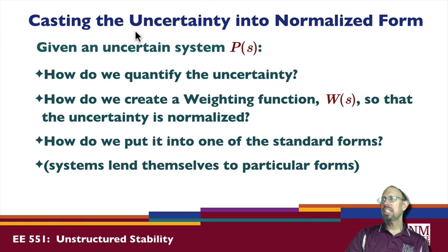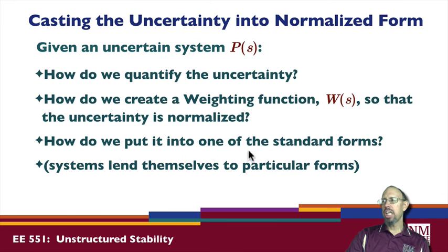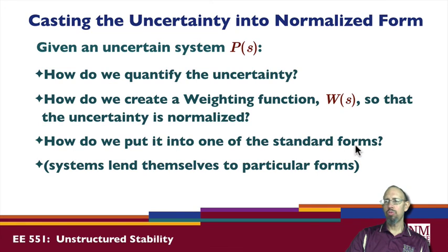In terms of casting the uncertainty into a normalized form: given an uncertainty, how do we quantify it, how do we create a weighting function W so that the uncertainty is normalized, and how do we put a problem into one of these standard forms? In general, systems will tend to lend themselves to particular forms, but to see how to actually do it we need to look at some example problems, which we'll see in the next lecture.